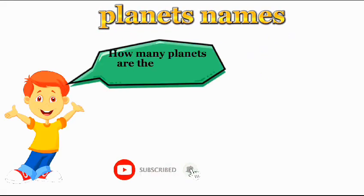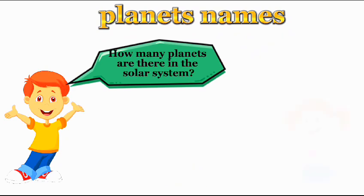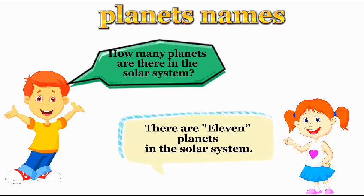How many planets are there in the solar system? There are eleven planets in the solar system.